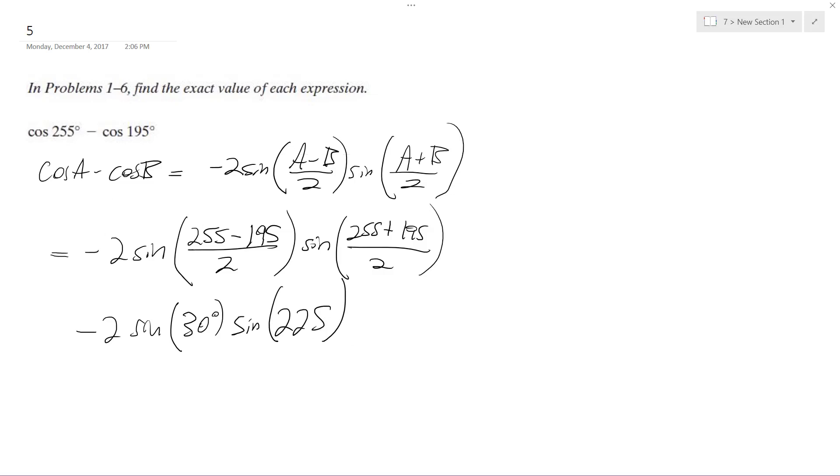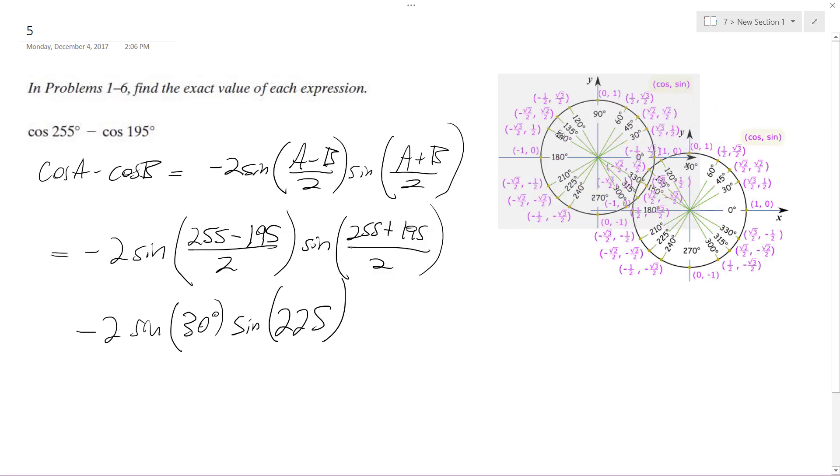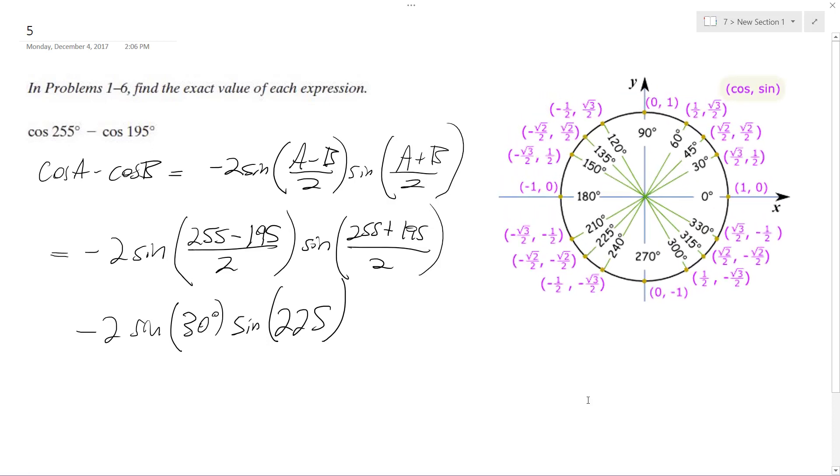So let me pull out my unit circle. So here, you have 2 times the sine of 30, which is equal to 1 half, and then the sine of 225, which is equal to negative root 2 over 2.